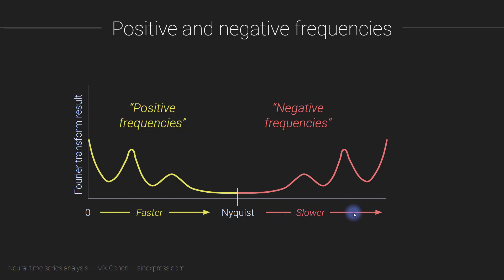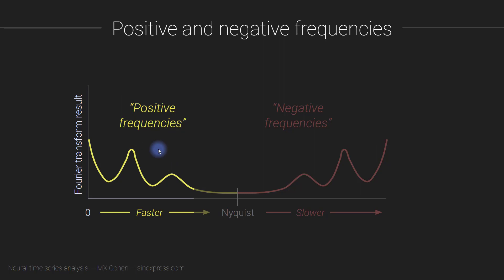In general, in practice, you don't plot the negative frequencies — you ignore them in data visualization. Instead, you plot only the positive frequencies. In fact, most people don't even plot all of the positive frequencies; they'll just plot some range. For example, if your signal only reasonably has energy up to 100 hertz, but you're sampling at 1000 hertz so the Nyquist is 500 hertz, you might cut off your plot at 100 hertz. So this is just a little bit about visualization.